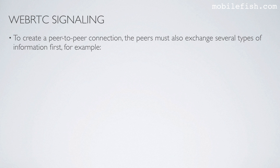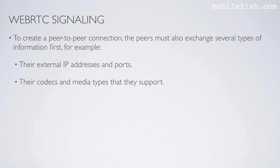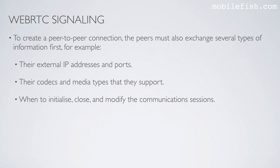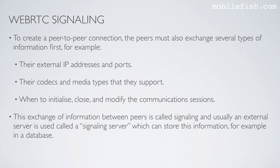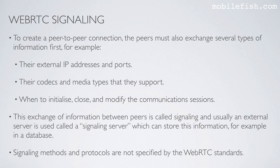To create a peer-to-peer connection, the peers must also exchange several types of information first — for example, their external IP addresses and ports, their codecs and media types that they support, and when to initialize, close, and modify the communication sessions. This exchange of information between peers is called signaling, and usually an external server called a signaling server is used, which can store this information in a database. Signaling methods and protocols are not specified by the WebRTC standard.